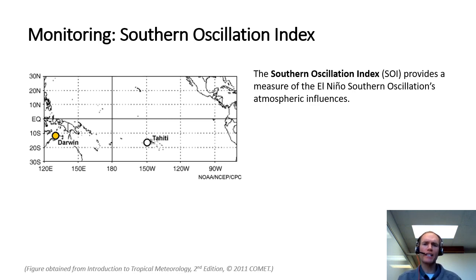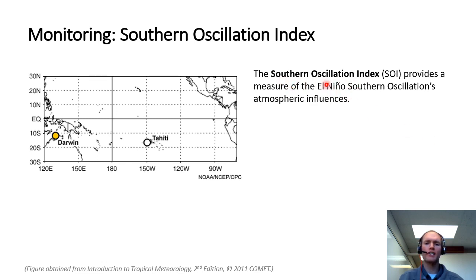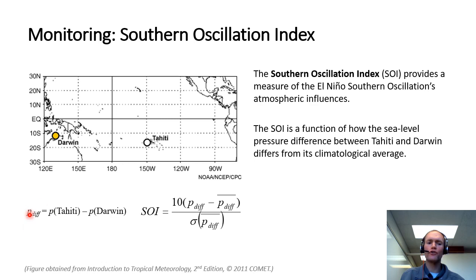Let's look at the atmospheric side and how we can monitor El Niño and La Niña — more formally, the Southern Oscillation — utilizing atmospheric data. The most common way is through what is known as the Southern Oscillation Index. When dealing with indices in the atmospheric sciences, it's usually some field — in this case mean sea level pressure — averaged over some box, in space or time, or both. In this case, it's a difference between Tahiti, at about 15°S and 150°W, and Darwin, at about 11°S and 130°E.